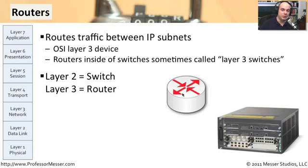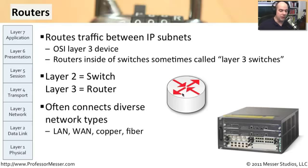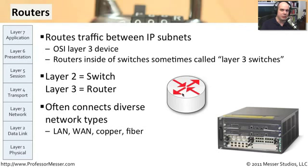Sometimes we don't say we need to route — sometimes we say we need to do layer three between those two particular subnets. Routers are also able to connect different network types. So you'll connect a wide area network connection, a fiber-based network connection, a copper-based network connection, and they'll all go through the router. The router is smart enough to do whatever types of signaling or packet translations are needed between those different networks. So not only are we connecting different IP subnets together, we can connect very diverse networks together with routers.